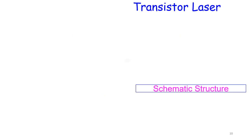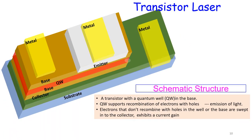This is the basic structure of the transistor laser, where the quantum well is sandwiched in the base region and the quantum well and base act as a barrier.